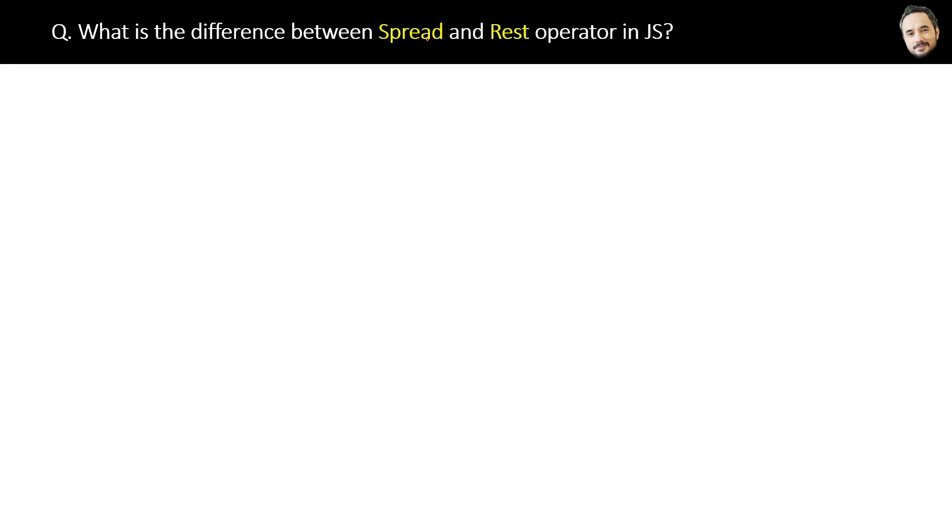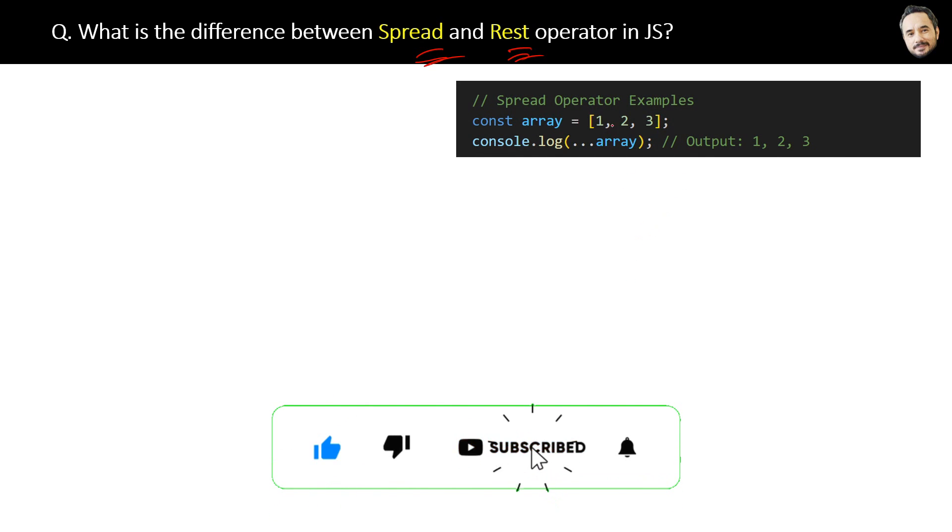What is the difference between spread and rest operator in JavaScript? Today I will clear the confusion between spread and rest operators which look the same - three dots, right? Let's first explore the spread operator. Here is the code. The spread operator is denoted by these three dots. Here you can see